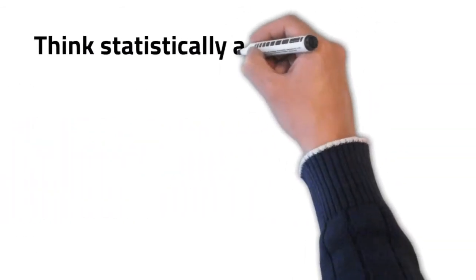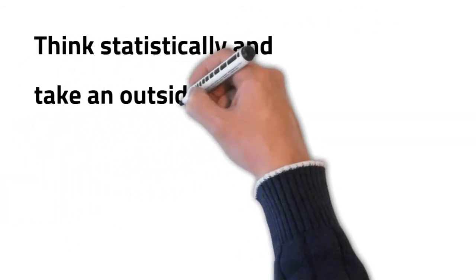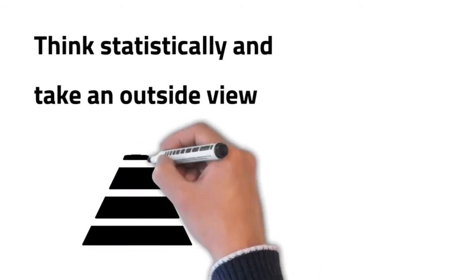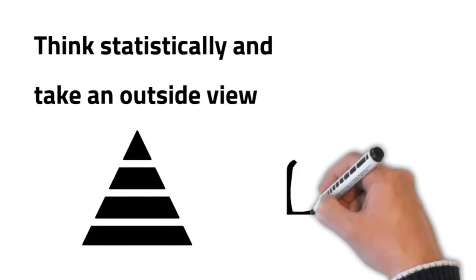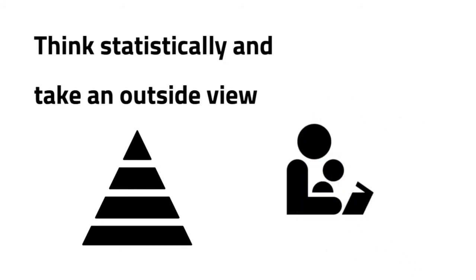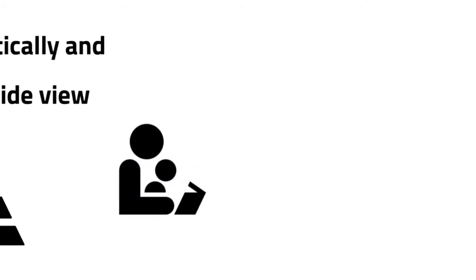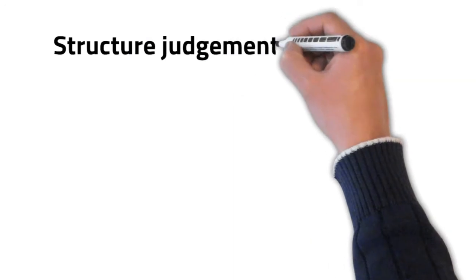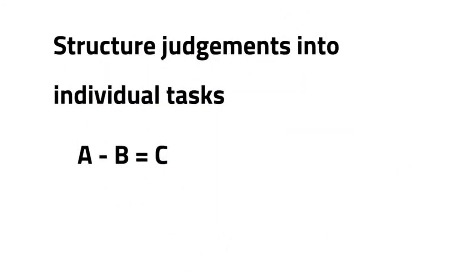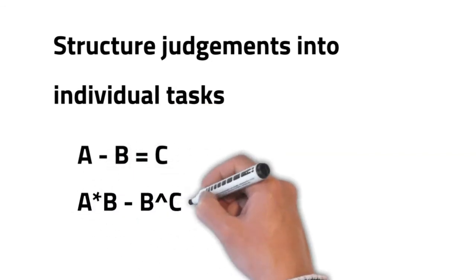The second guideline: think statistically and take an outside view. Think of the problem as a member of a similar class of problems, and don't try to create a casual story to explain it. Third: structure judgments into individual tasks. It's easier to pass judgments on single variables than a large, complicated, interconnected number of variables.